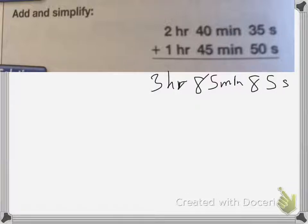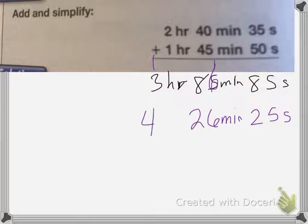Now I need to change those so they're correct. There are 60 seconds in a minute. So I'm going to take away 60 seconds from here. So I'm going to end up with 25 seconds. I'm going to add a minute here. So that's going to be 86 minutes. But I know that there are 60 minutes in an hour. So I'm going to take away 60 minutes from there and end up with 26 minutes and add an hour here. So it's going to be 4 hours, 26 minutes, and 25 seconds.